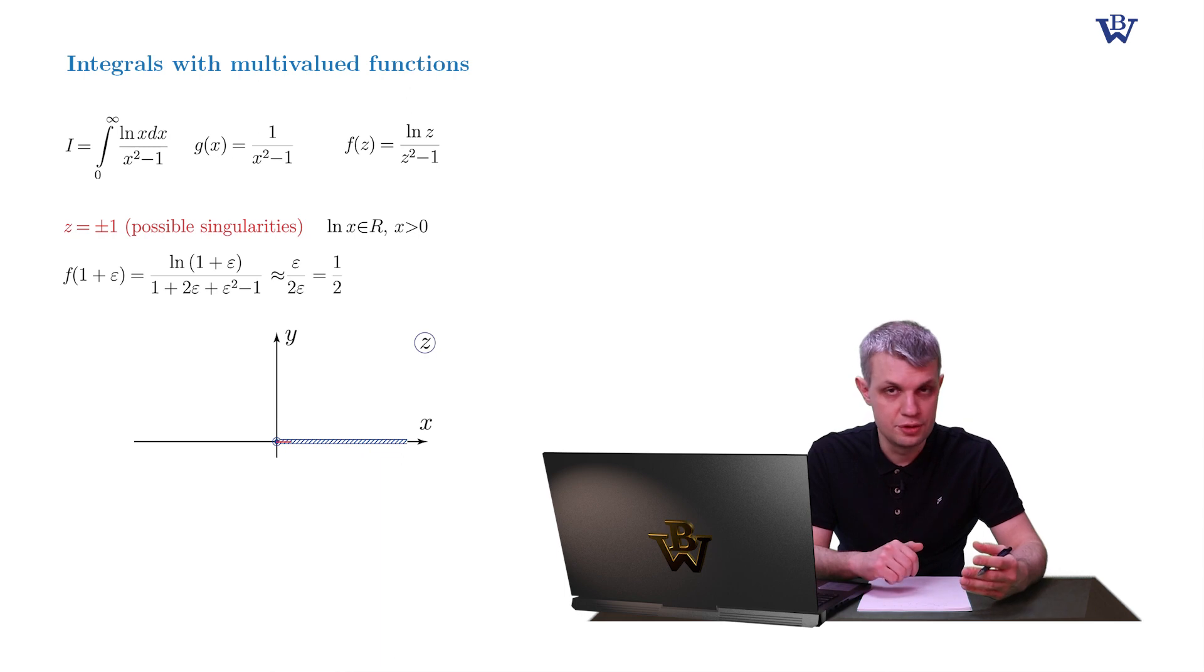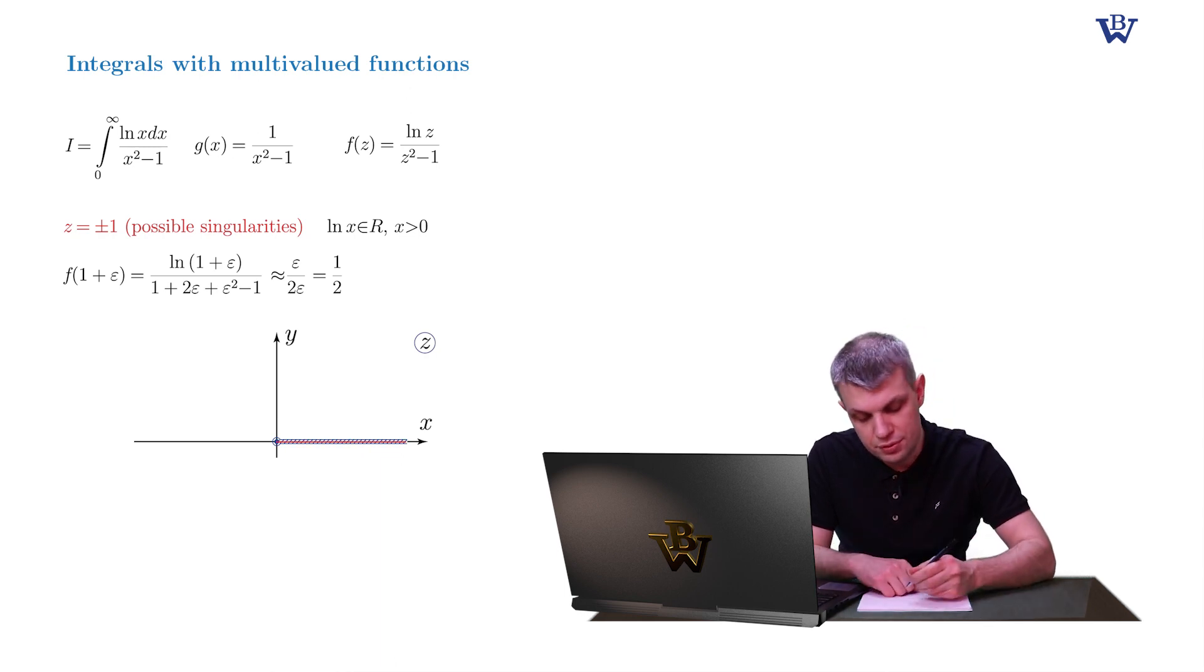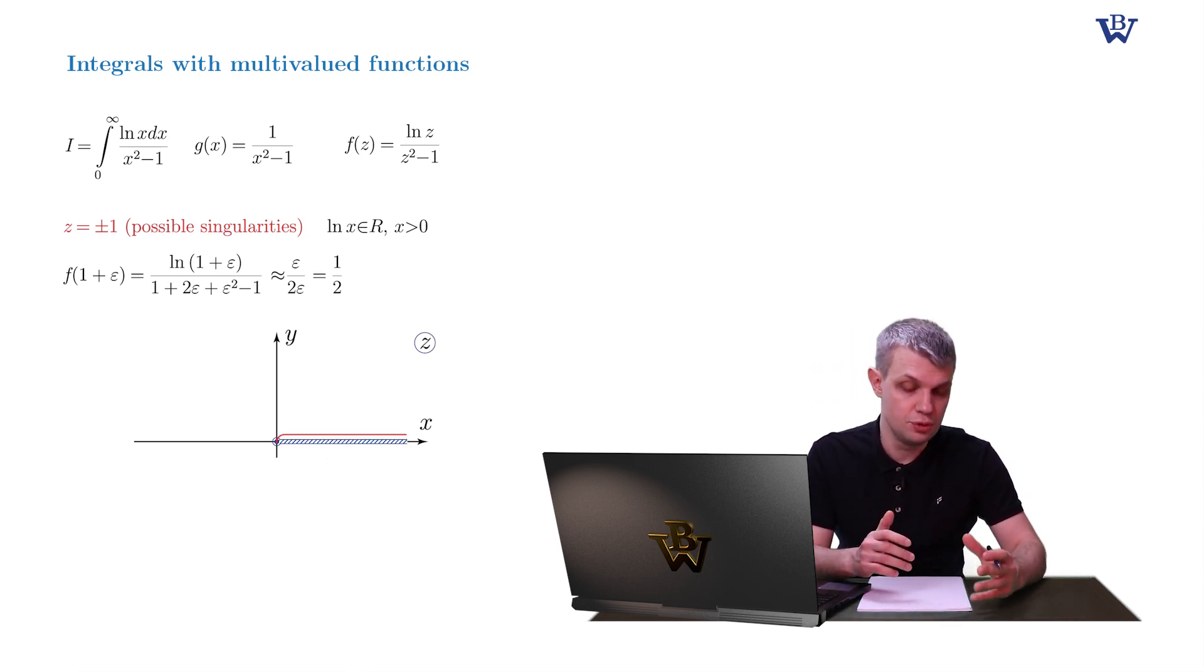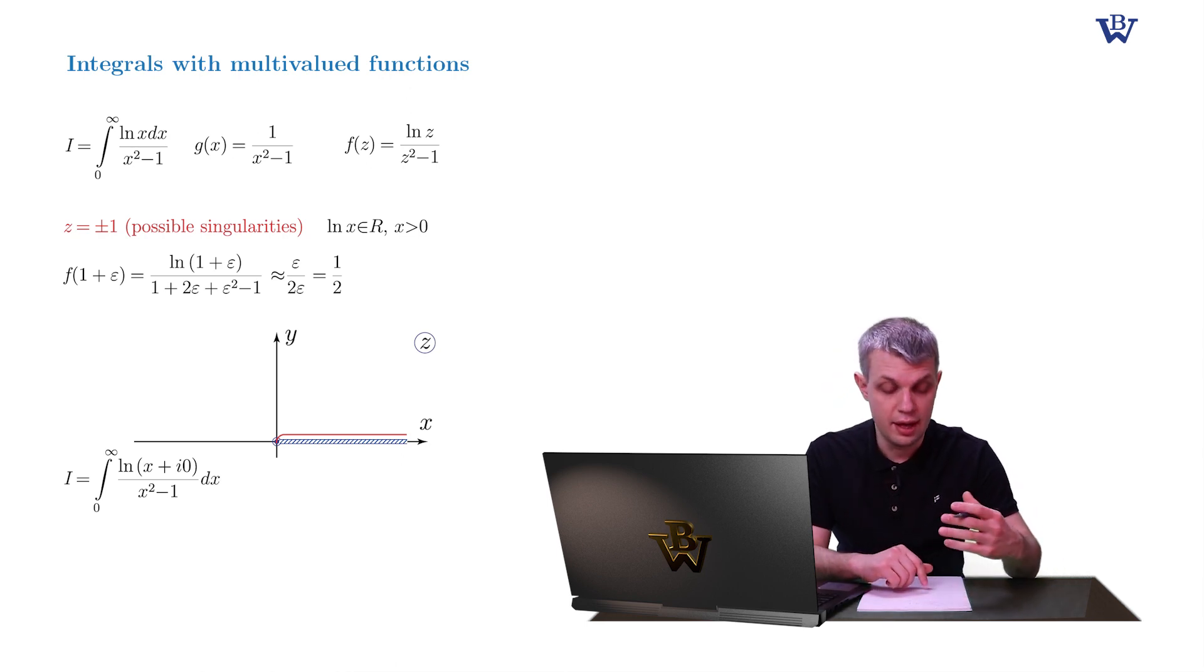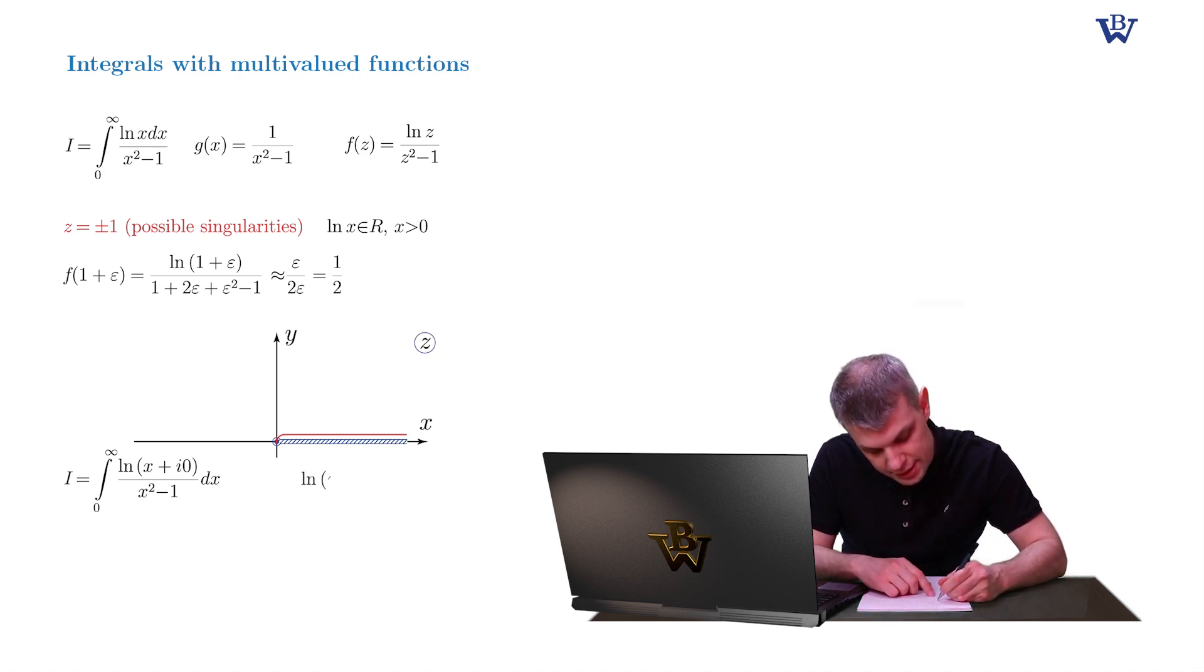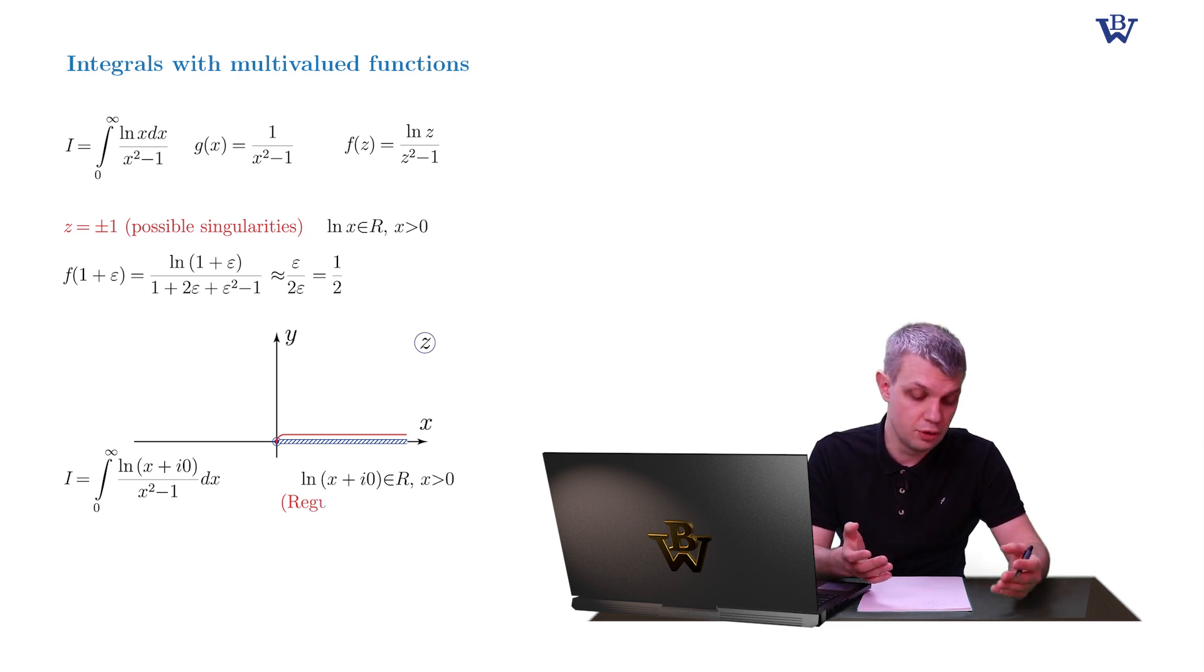The contour itself now should be pulled slightly upwards or downwards. We choose the upward deformation and equate our original integral with this new contour one. So now our integral is equal to the log of x plus i0 divided by x squared minus 1, dx. And this step automatically fixates the regular branch of our log function. So log of x plus i0 is real for positive x.